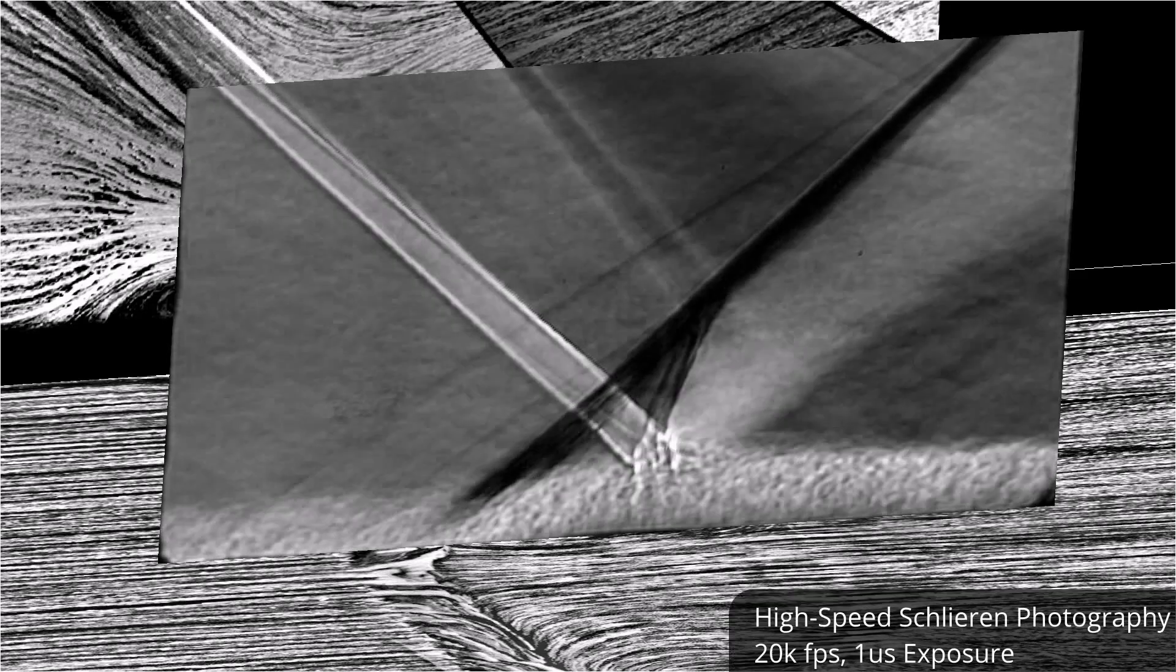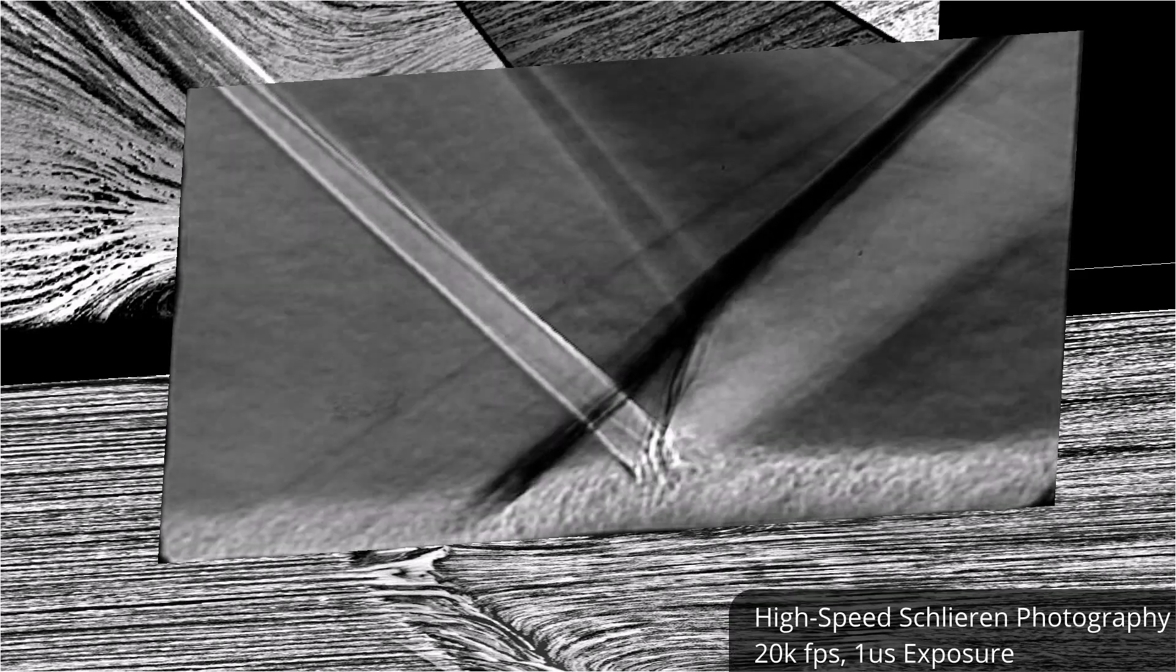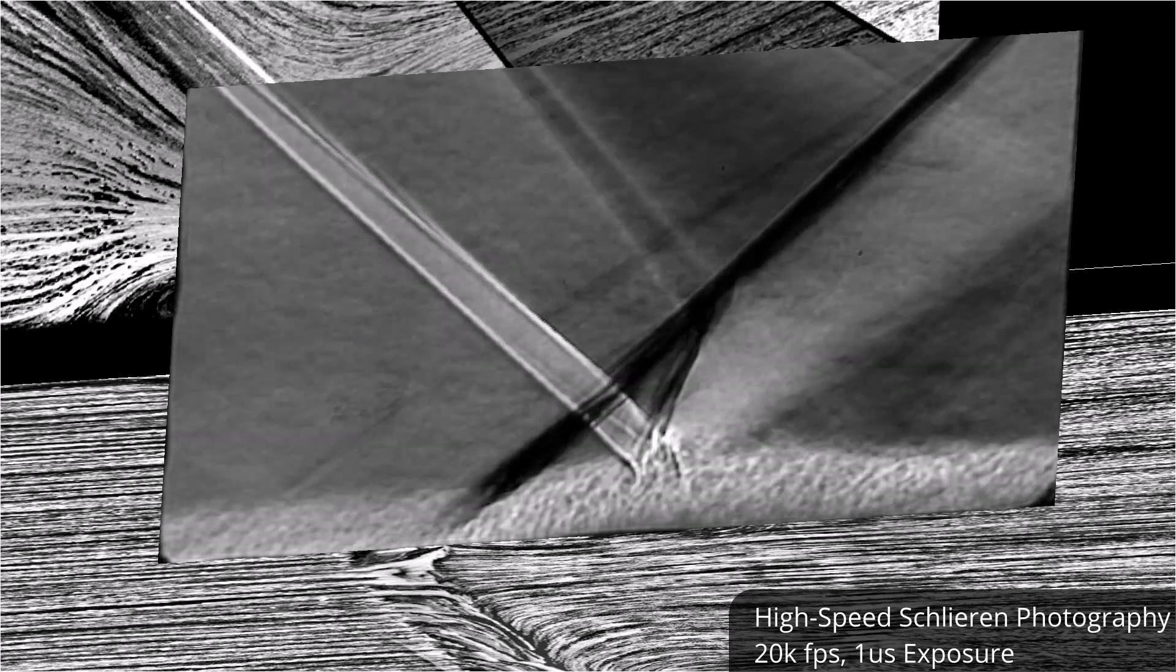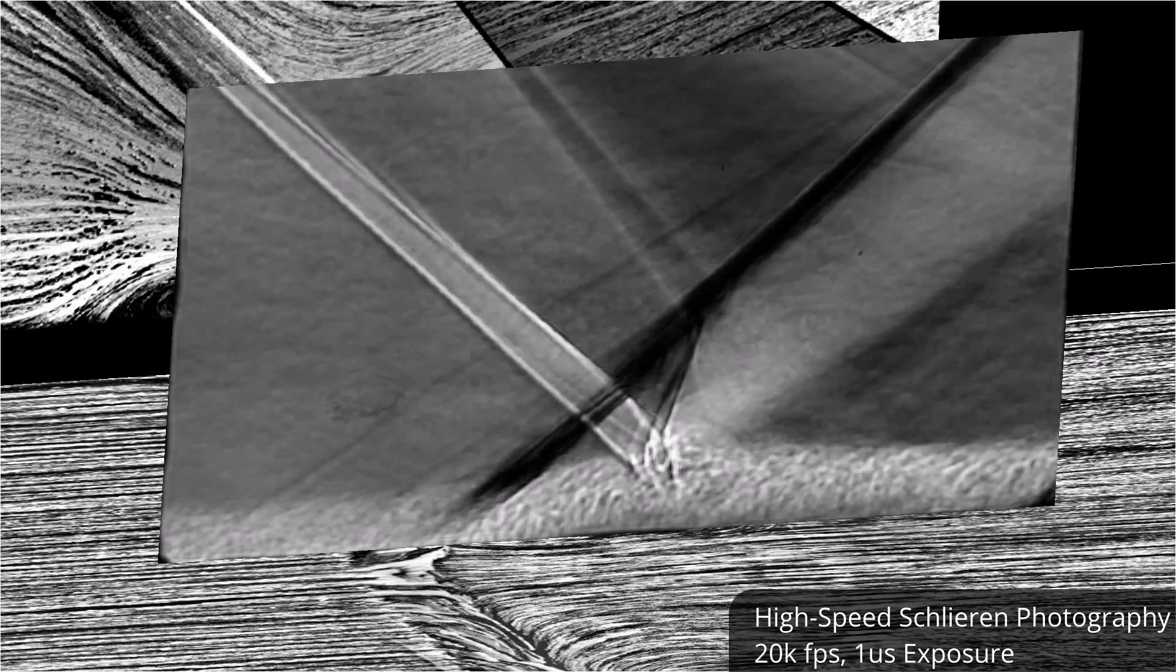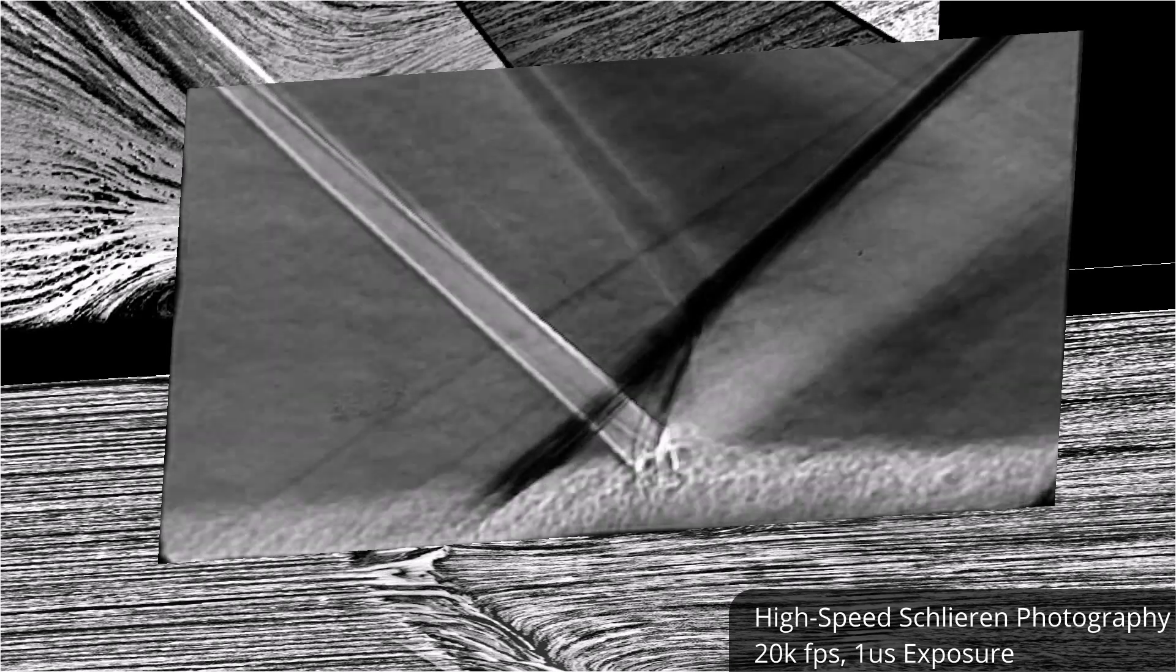Up to this point we have only considered the spatial variations in the flow field, but one of the most interesting and challenging properties of any shock boundary layer interaction is its inherent unsteadiness over a very wide frequency range.